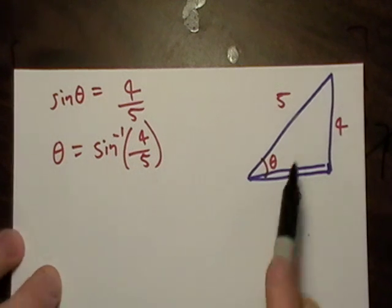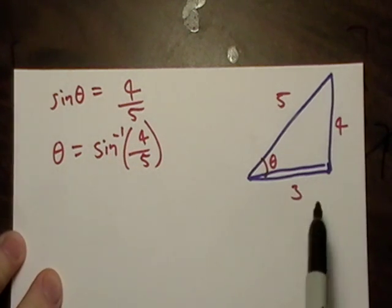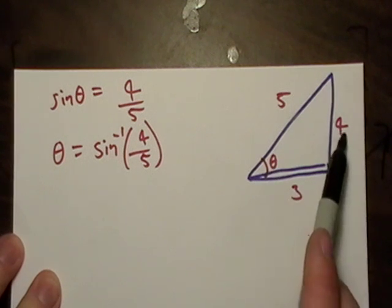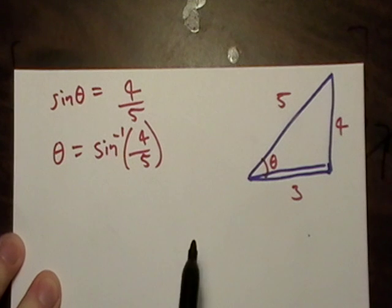I've sketched a little triangle over here. You've seen this triangle before, 3, 4, 5. Sine theta is going to be opposite over hypotenuse. You already knew that from trigonometry. If not, we can review.